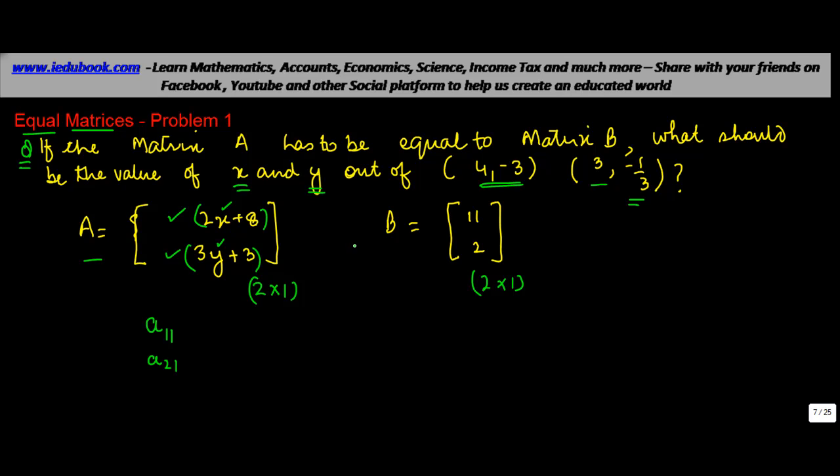Now, if you remember, the condition for equal matrix was that the order of the matrix should be the same, which is 2 in this case, and each of the corresponding elements have to be equal. Meaning thereby, that if A11 is equal to 2x plus 8, and A21 is equal to 3y plus 3, then B11 is equal to 11, and B21 is equal to 2. So if these matrices were to be equal, then Aij should be equal to Bij, where i and j represent the row and column value.